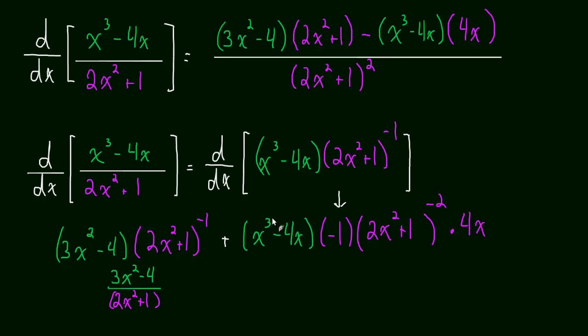but this whole thing is going to be negative because of this negative 1. So, we'll just subtract now. And then we have x cubed minus 4x, times by 4x. That's right here.